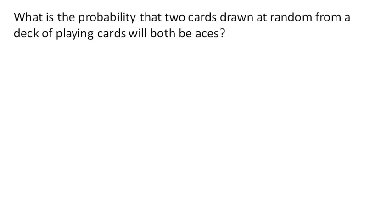So what is the probability that two cards drawn at random from a deck of cards will both be aces? Now you note that the probability of pulling one card and getting an ace is 4 out of 52.